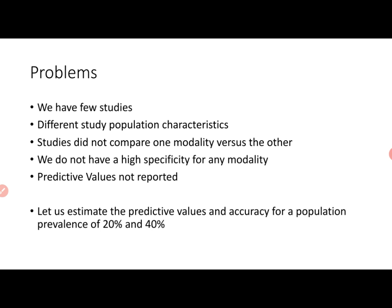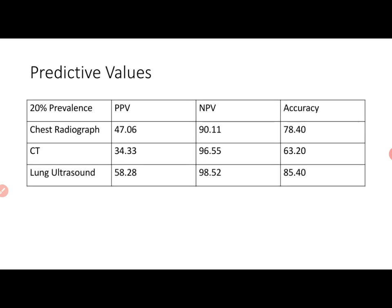Let's look at predictive values and accuracy for a population prevalence of 20% and 40% and see what happens. At 20% prevalence, we find the negative predictive values are good — very good for lung ultrasound and CT, a little lower for chest radiograph. However, we find that the accuracy is good for chest radiograph and lung ultrasound. The accuracy is on the lower side — 63.20 — for CT, because the positive predictive value is much lower.